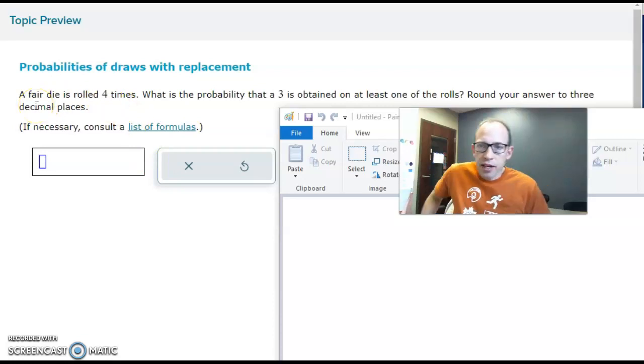All right, we have a fair die, which just means numbers one through six equally likely to get any of them. What's the probability that a three is obtained on at least one of the rolls?